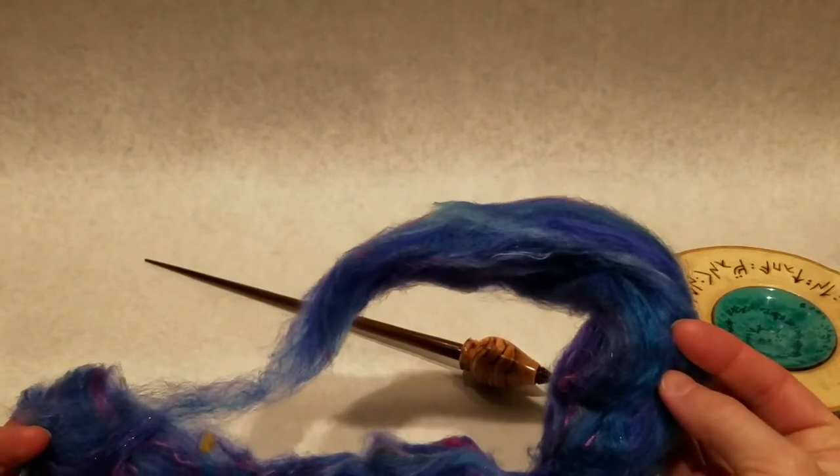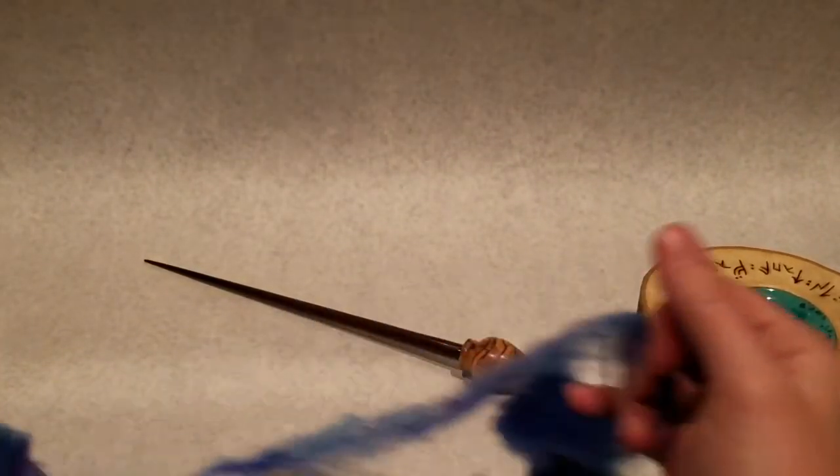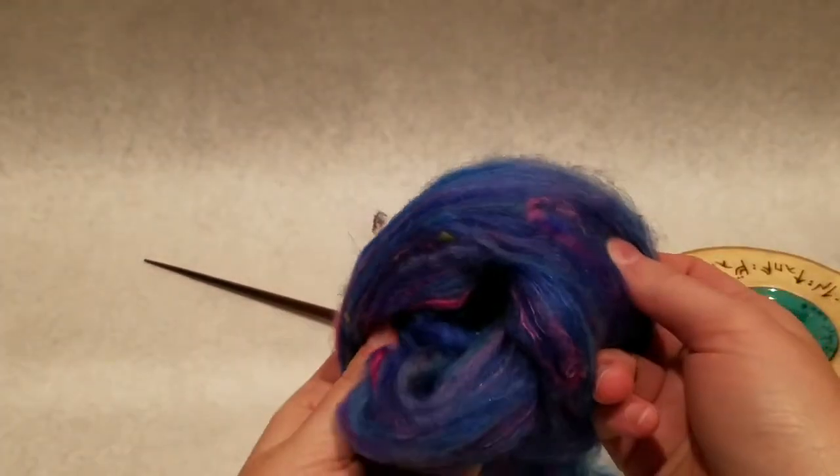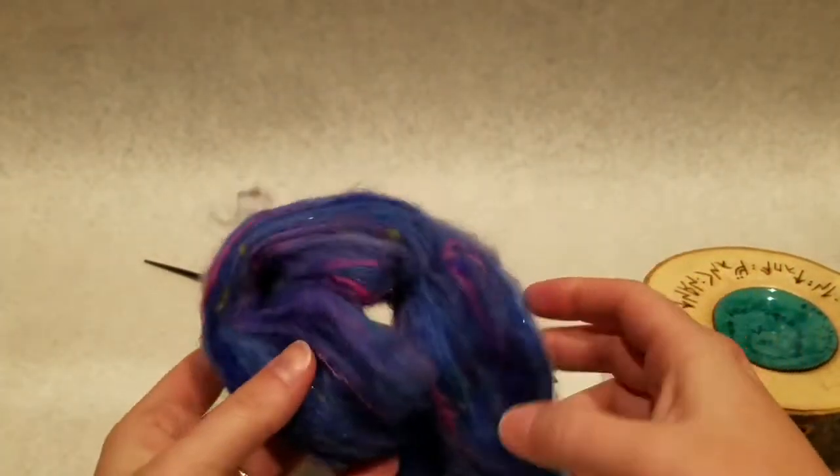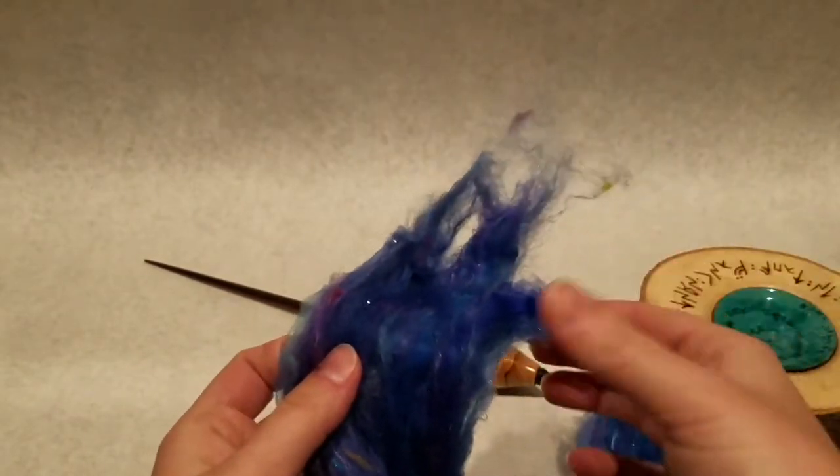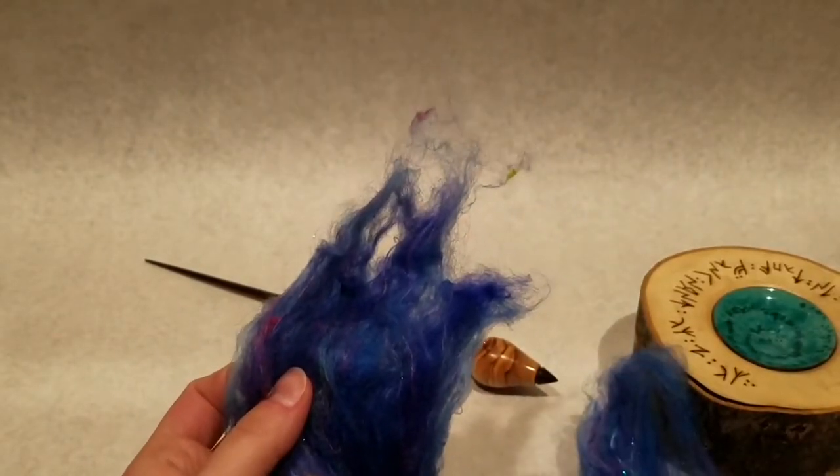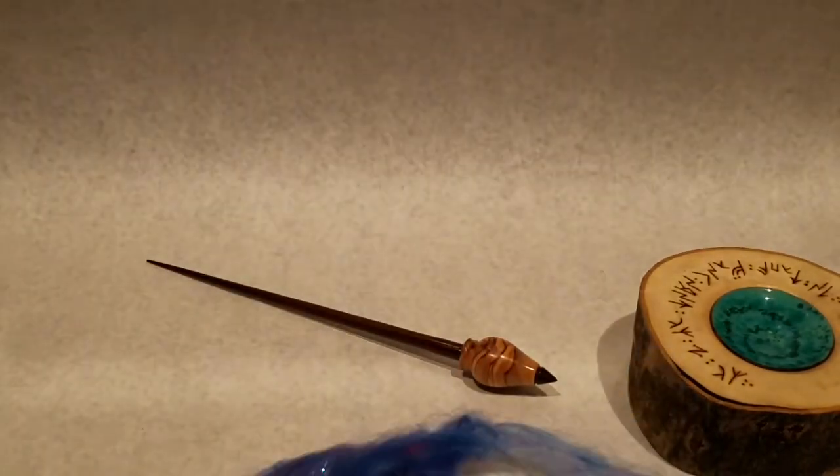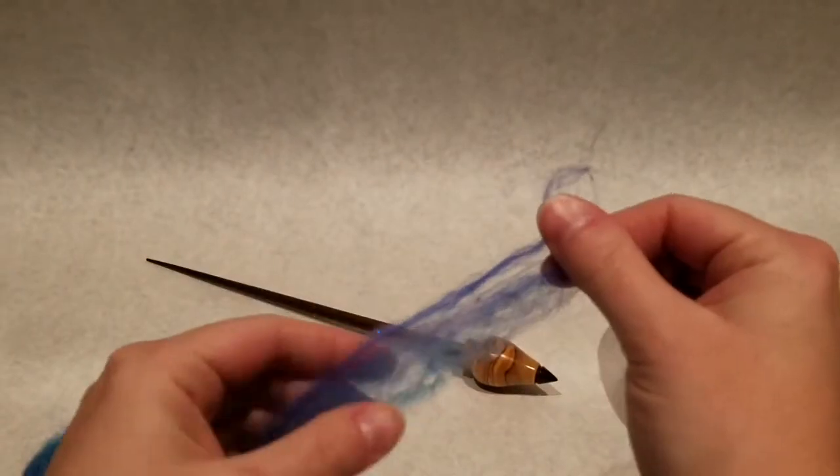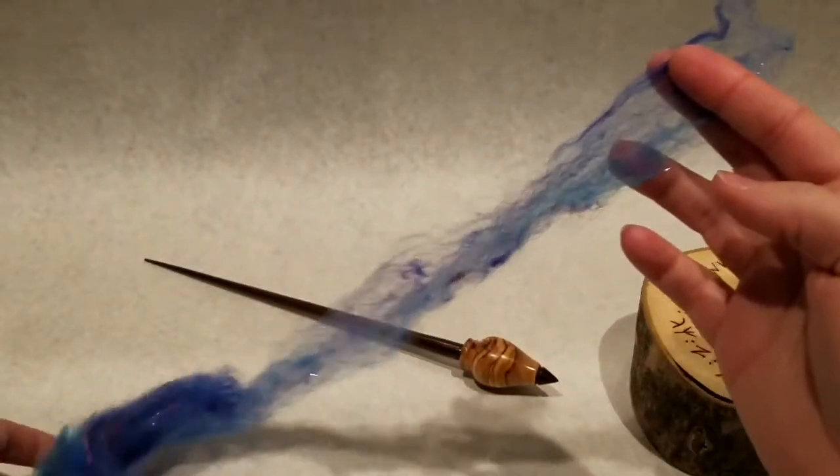And what I've done—it was all rolled up and beautiful in this little cocoon—and I unrolled it and the ends were kind of chunky, not conducive to immediate support spinning. So what I did on the other end is I've kind of drafted it out.